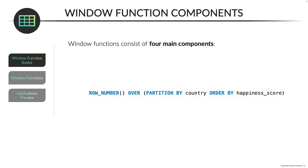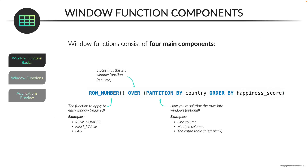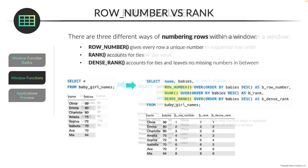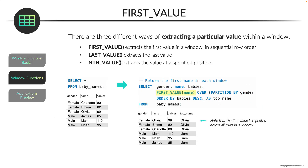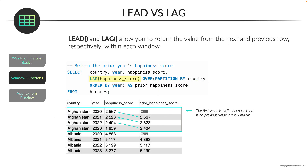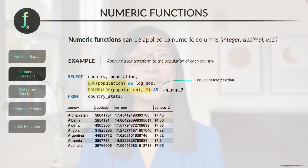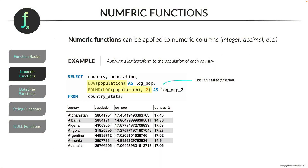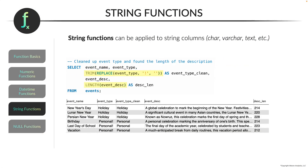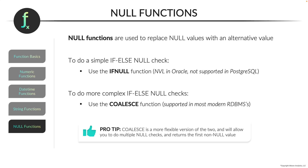From there, we'll break down each component of a window function and review common window functions such as row number, rank, first value, lead, and lag. We'll also cover general functions for working with different data types in SQL, including numeric, datetime, string, and null functions.